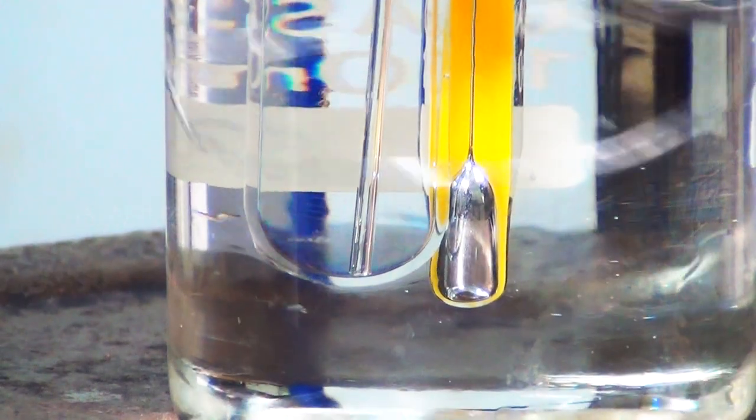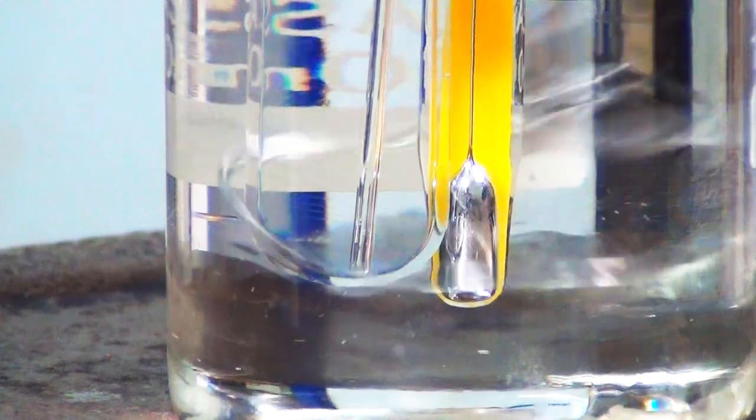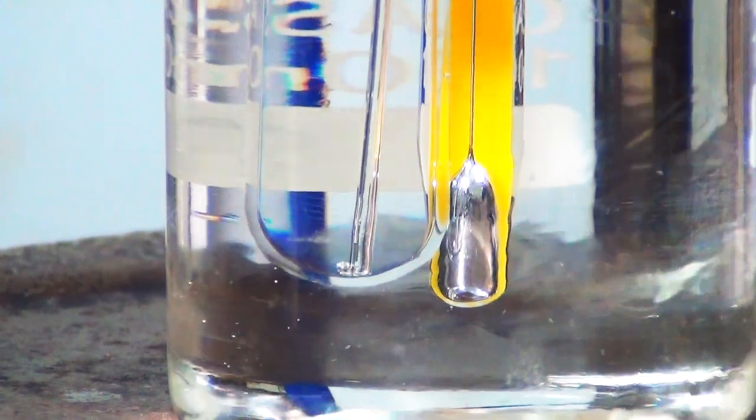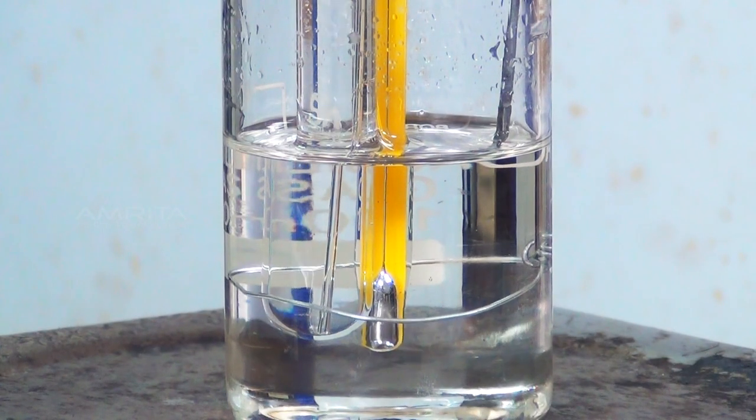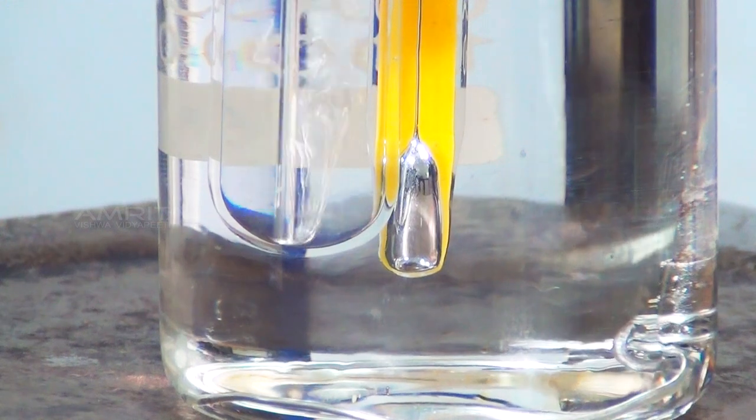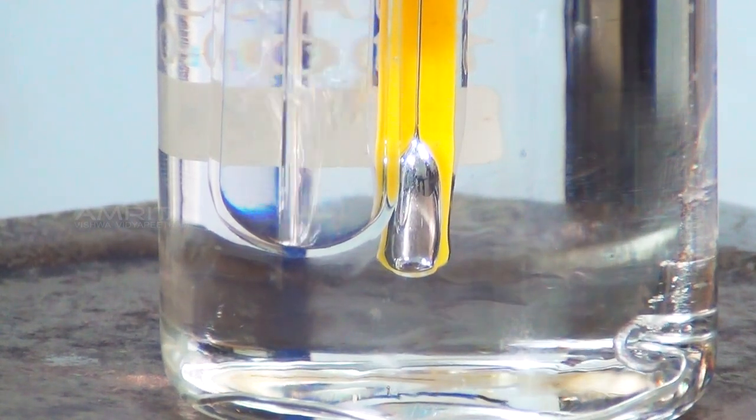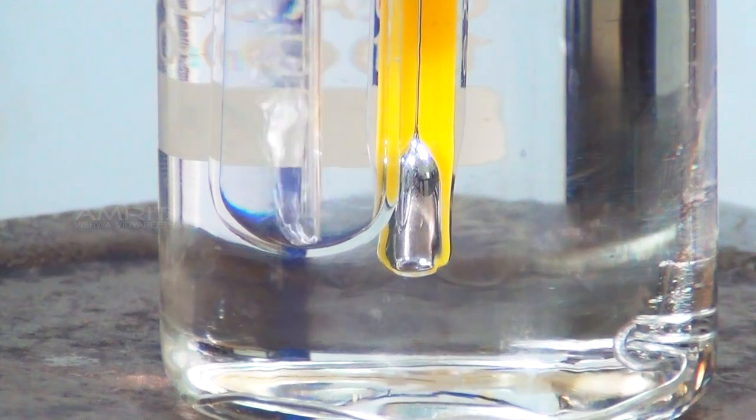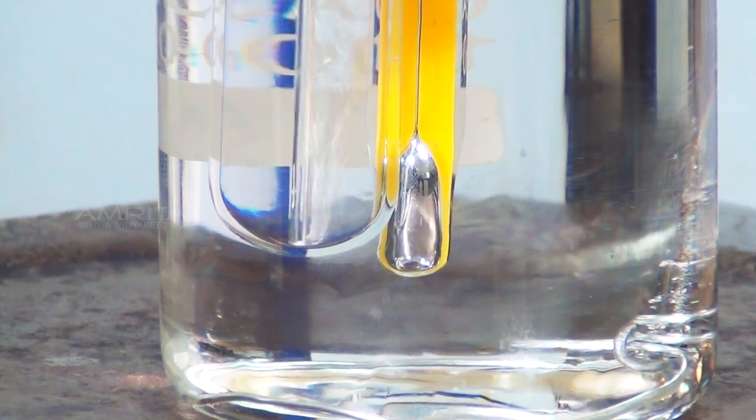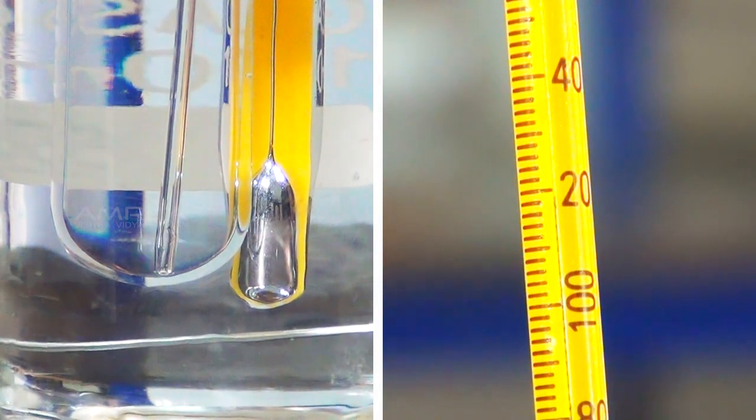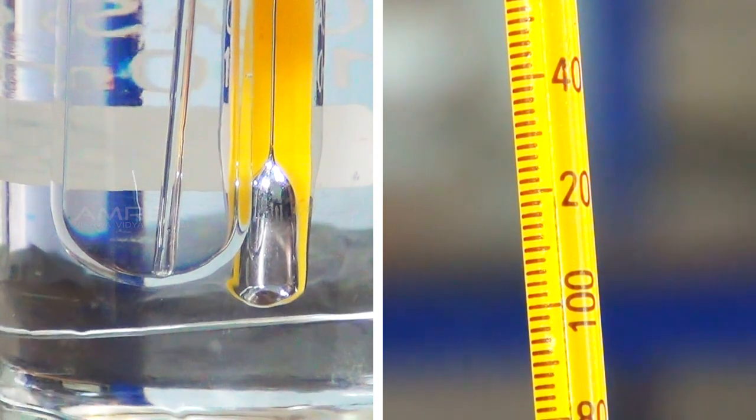At first, a bubble or two will be seen escaping at the end of the capillary tube dipped in toluene but soon a rapid and continuous stream of air bubbles escape from it. At this stage, the vapour pressure of the liquid just exceeds the atmospheric pressure. Note the temperature T1 when continuous stream of bubbles start coming out.